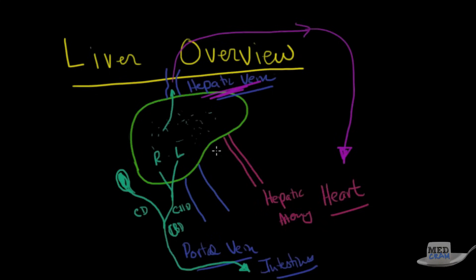The heart also pumps oxygenated blood to the liver, because the liver, just like any other organ, needs oxygenated blood to survive. And that's where it gets its supply. But the major source of blood supply to the liver is actually from the portal vein.